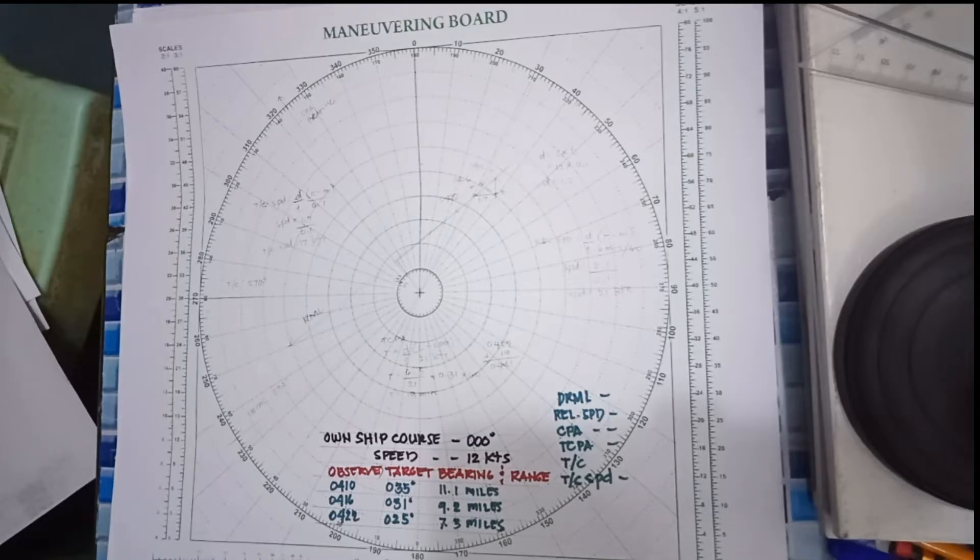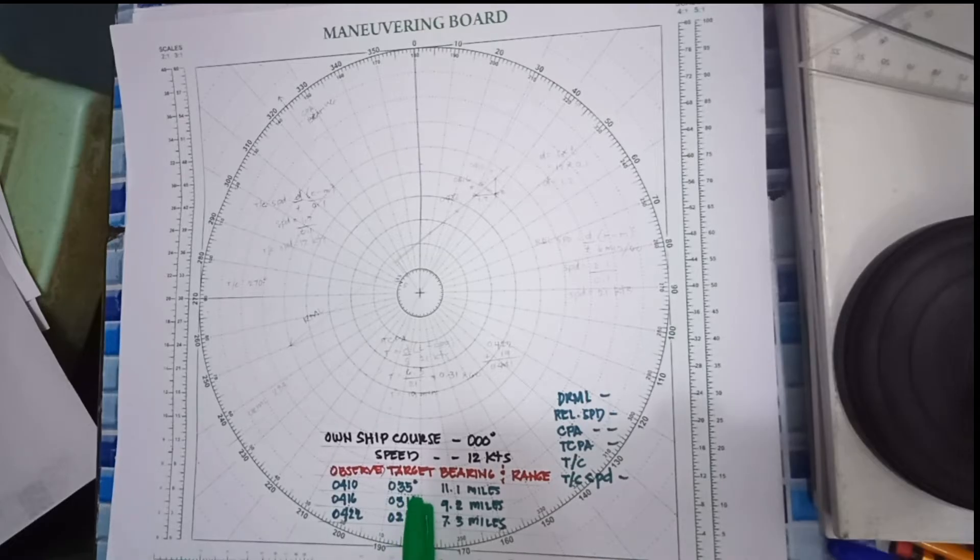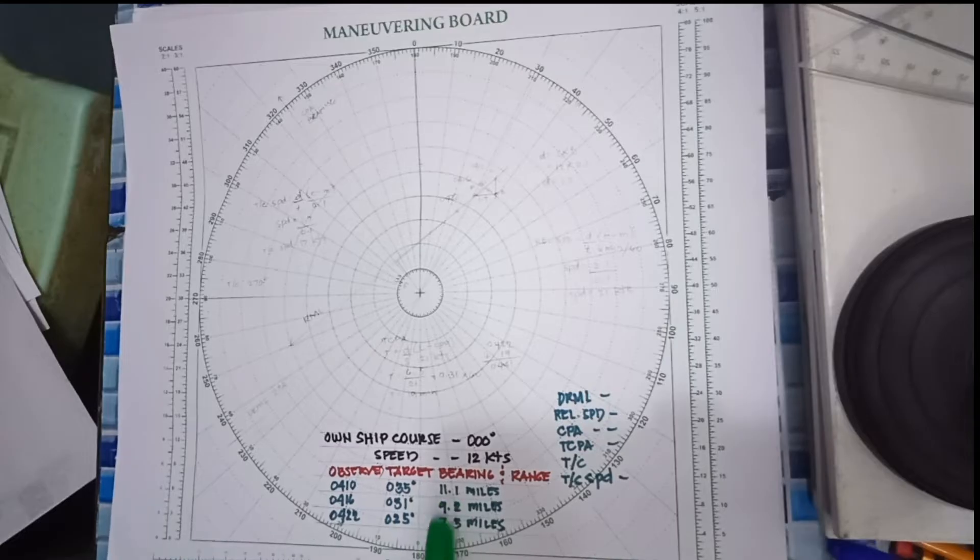In this case, our ship's course is 000 degrees with a speed of 12 knots. The observed bearing and range of the target at 0410 hours: the first bearing is 035 degrees with a distance of 11.1 miles.